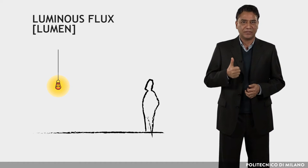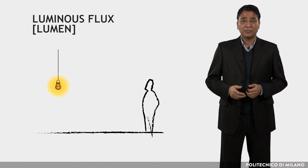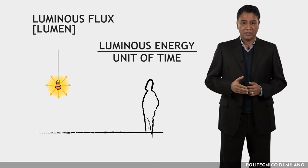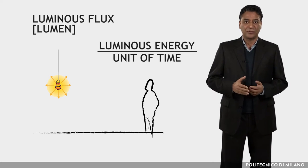In order to talk about light, we have to introduce the fundamental measuring units. The first one is luminous flux. The unit is lumen. This quantity indicates the amount of luminous energy emitted per unit of time from a source. Luminous energy means radiant energy emitted in the range of 380 to 780 nanometers.